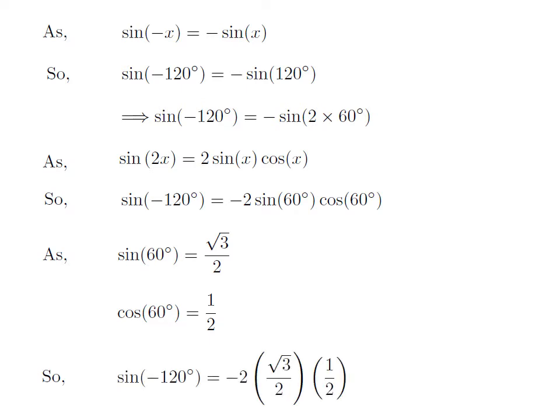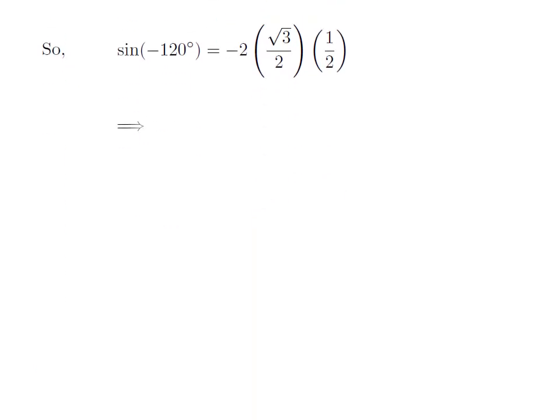Plugging the above values into the expression for sine of minus 120 degrees, we get minus 2 times square root of 3 upon 2 into one half. Cancelling out the common factor 2 in the numerator and denominator gives us sine of minus 120 degrees is equal to minus square root of 3 upon 2.